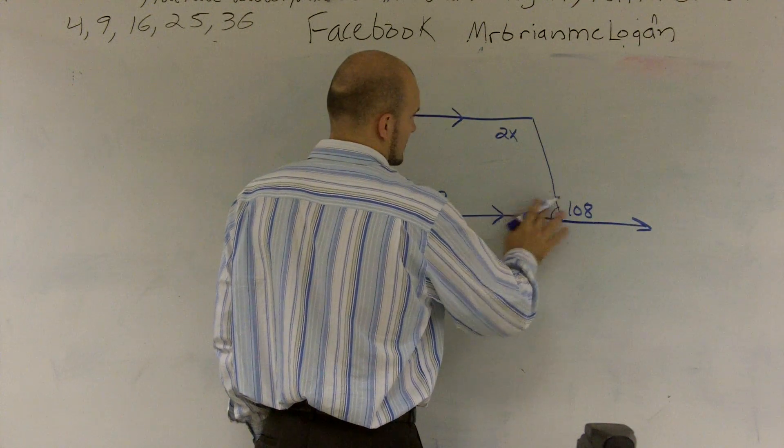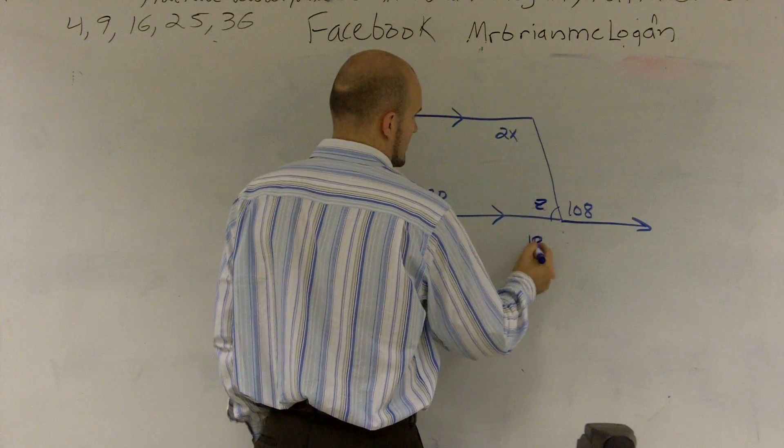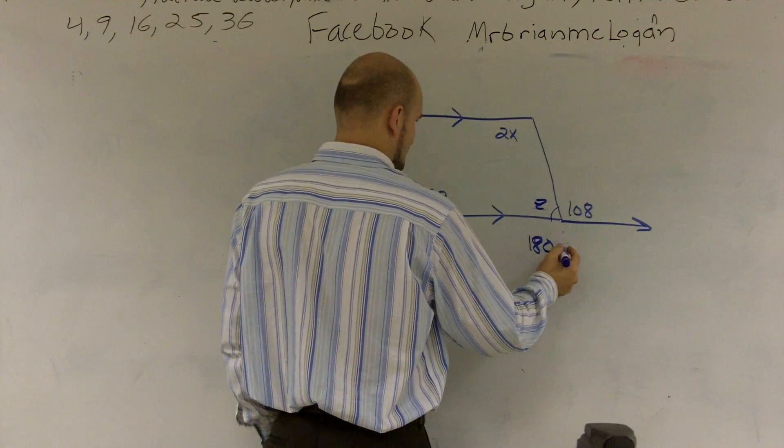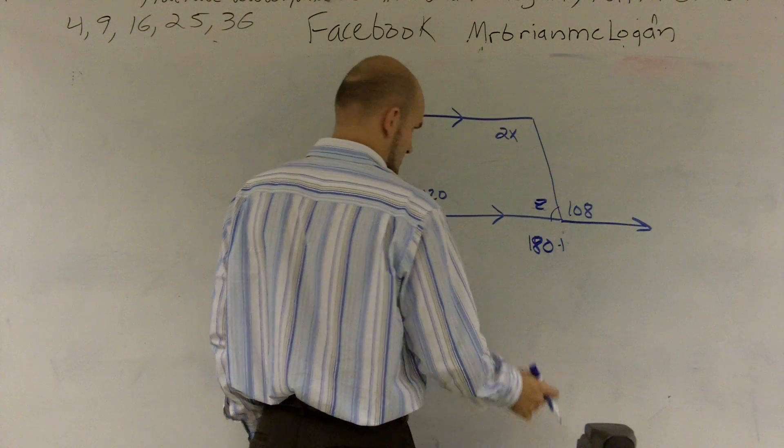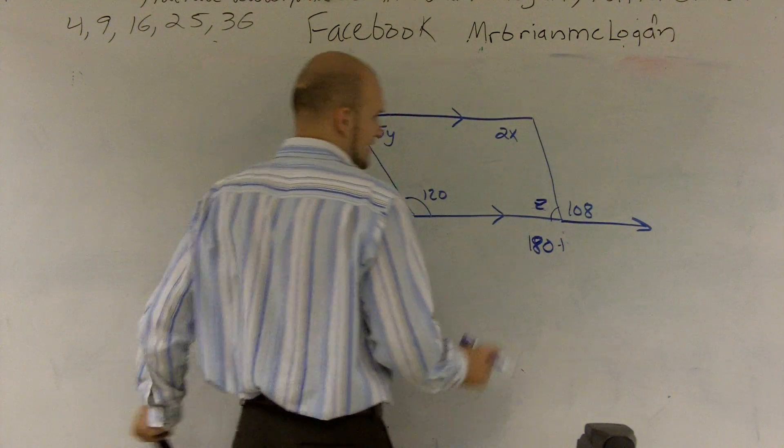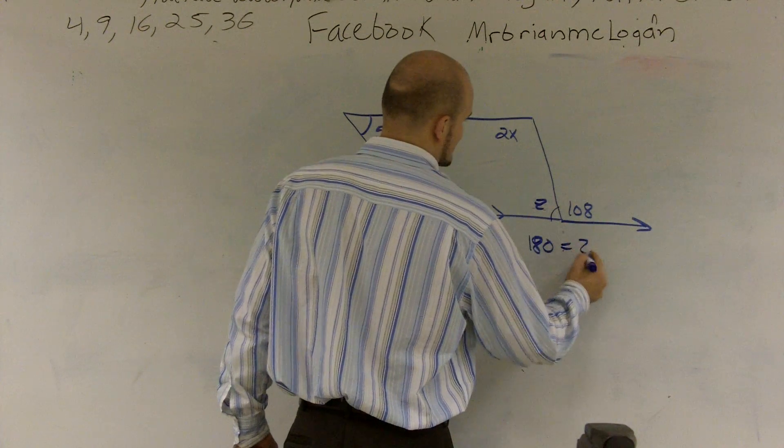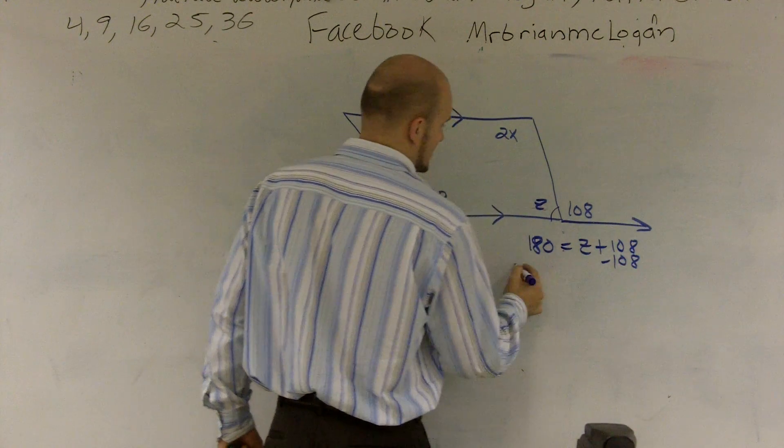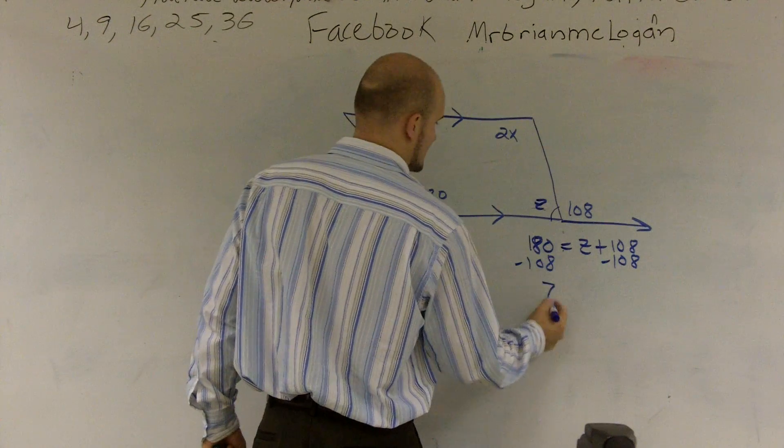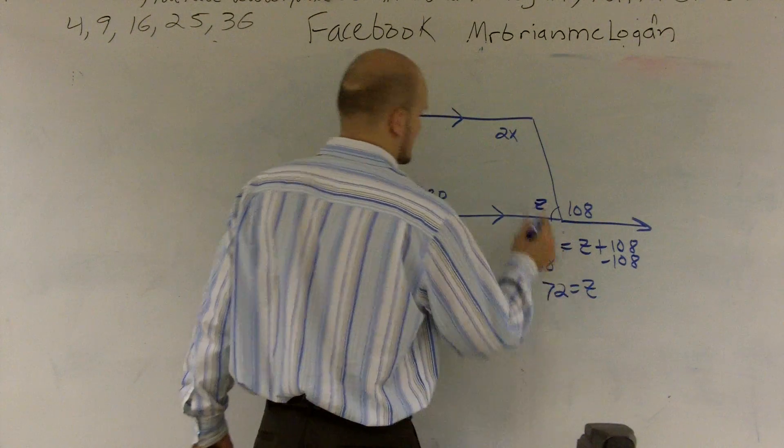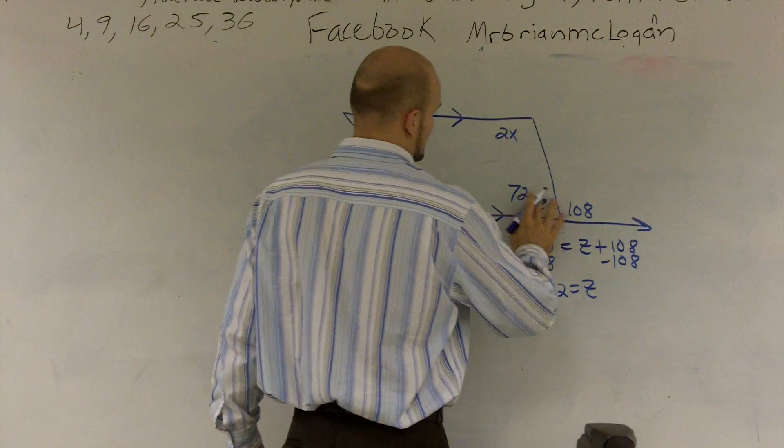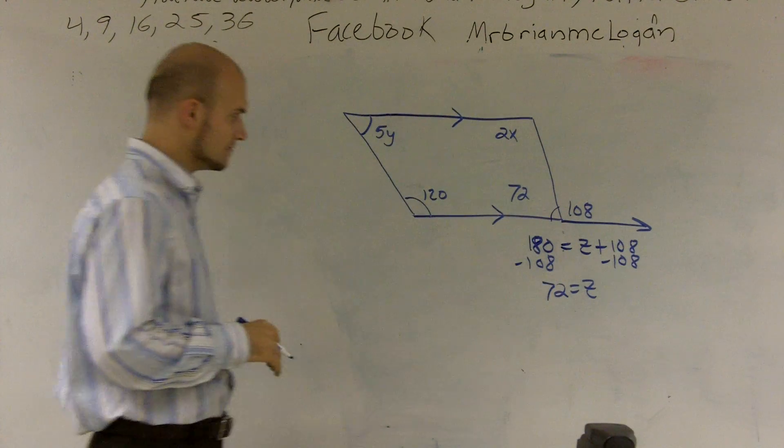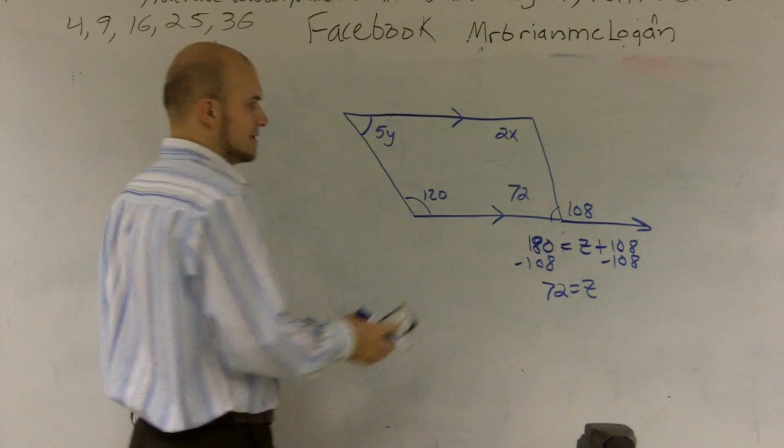So I can just say 180, let's just call this z. So 180 equals z plus 108. Subtract 108, and you get 72 equals z. So now I can write 72 there. Okay, so we figured that one out.